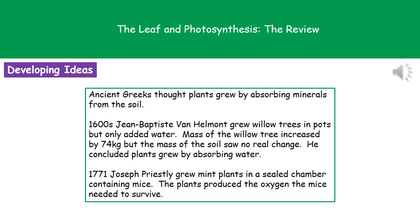Moving forward to the 1600s, we encounter Jean-Baptiste van Helmont, who carried out a relatively important experiment. He grew willow trees in pots, weighed the willow tree, the pot, and the soil at the start, and then only added water. Later he re-recorded the mass of the willow tree and the soil, and found that the willow tree had increased significantly — by 74 kilograms — while the soil hadn't really changed. His theory was that plants grow by absorbing water, as that was the only thing he had added.